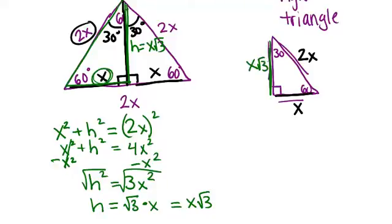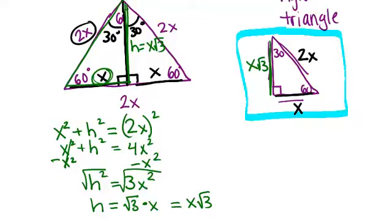So this right here is the pattern you need to know for a 30-60-90 triangle. If you think about the side across from the 30 degree angle as x, then the side across from the 60 degree angle will be that number times root 3, and the side across from the 90 degree angle, or the hypotenuse, will be double.